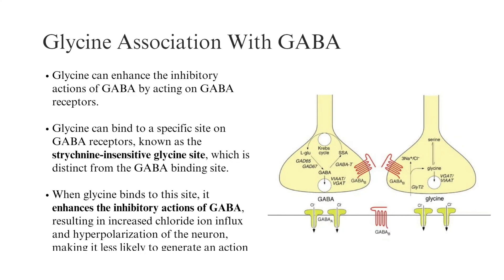Glycine Association with GABA: Glycine can enhance the inhibitory actions of GABA by acting on GABA receptors. Glycine can bind to a specific site on GABA receptors known as the strychnine-insensitive glycine site, which is distinct from the GABA binding site. When glycine binds to this site, it enhances the inhibitory actions of GABA, resulting in increased chloride ion influx and hyperpolarization of the neuron, making it less likely to generate an action potential.